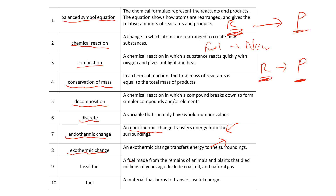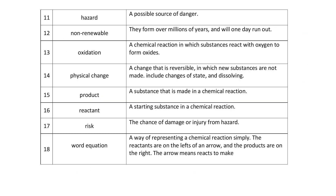A fuel made from the remains of animals and plants that died millions of years ago — coal, oil, natural gas — that is a fossil fuel. A material that burns to transfer useful energy is fuel, like coal, oil, and gas.